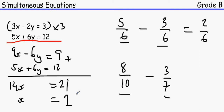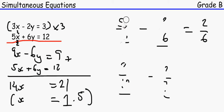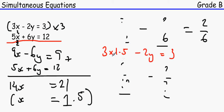Since x is the same in both equations, we substitute x equals 1.5 into the first equation: 3 times 1.5 minus 2y equals 3. Multiplying gives 4.5 minus 2y equals 3. Remember the fundamental algebra rule: keep letters on one side and numbers on the other.